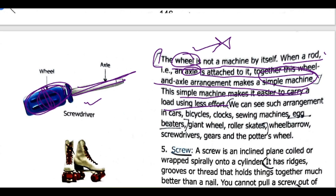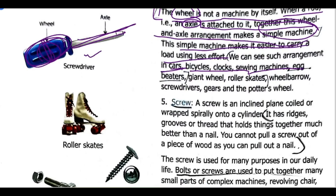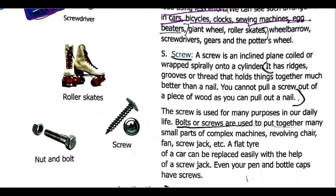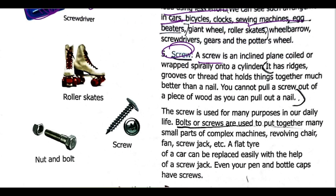Examples of wheel and axle arrangements include: car, bicycle, and clock. The wheel is very important.